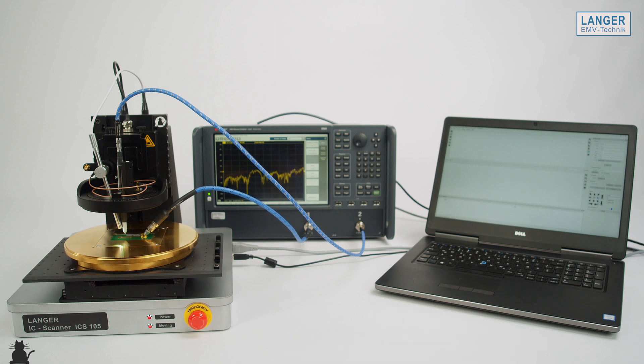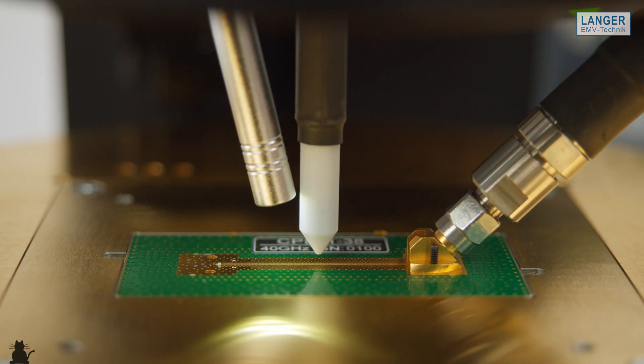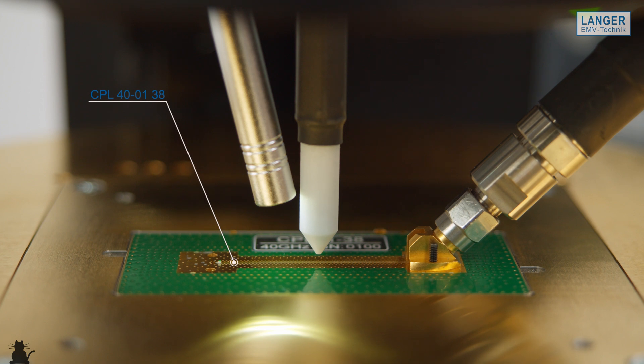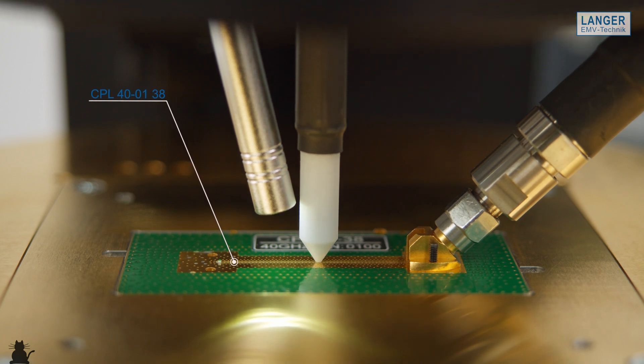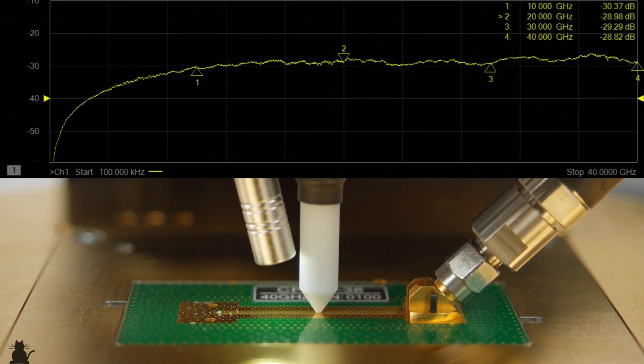The Langer stripline CPL400138 is suitable for calibrating the HRE41. The transmission behavior of the near-field probe is almost constant in the frequency range from 8 to 40 GHz and thus enables reproducible measurement results, for example to verify and refine simulation models.